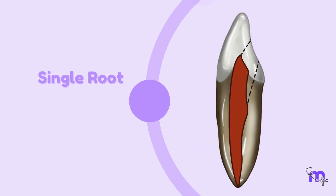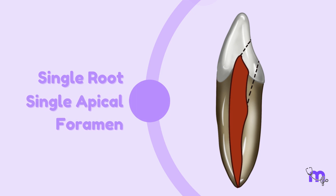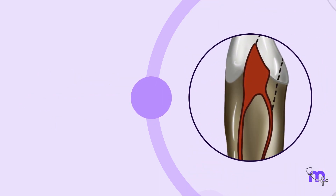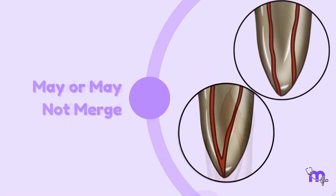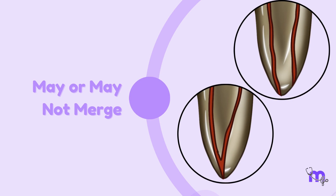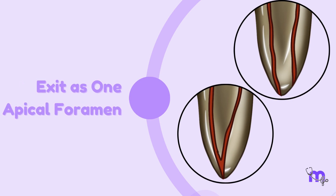While the single root naturally exits as a single apical foramen, there could be variations where it divides into two canals and may or may not merge again to exit as one apical foramen.